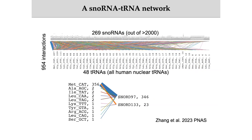Using our new method, we identified around 269 snoRNAs that can interact with tRNAs, and we identified around 954 interactions between snoRNAs and tRNAs. These interactions can include almost all the tRNAs in the human genome. We found that the most abundant interactions are between snoRNA 97 and its target, tRNA-methionine. However, because tRNAs are too short and carry too many modifications, it would be really hard to verify them one by one.